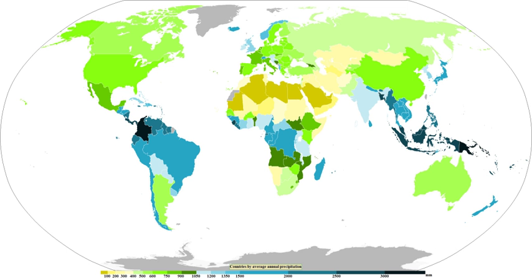In Hawaii, Mount Wai'ale'ale on the island of Kauai is notable for its extreme rainfall, as it has the second-highest average annual rainfall on Earth, with 12,000 mm. Storm systems affect the state with heavy rains between October and March. Local climates vary considerably on each island due to their topography, divisible into windward and leeward regions based upon location relative to the higher mountains.